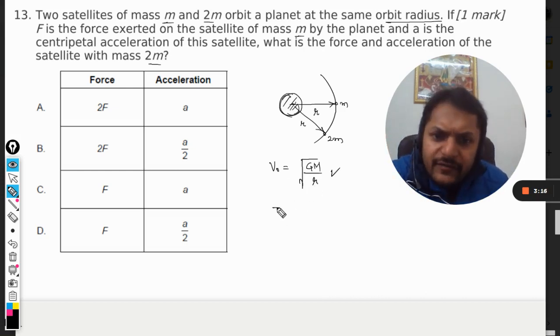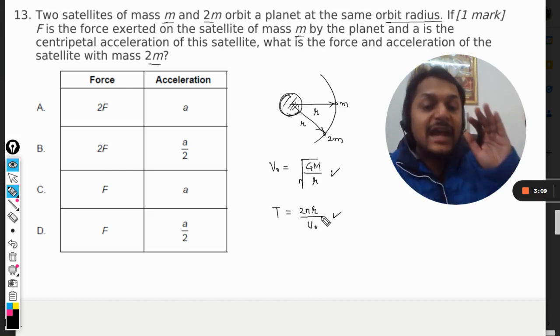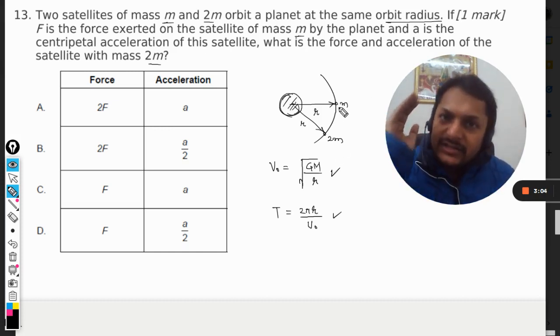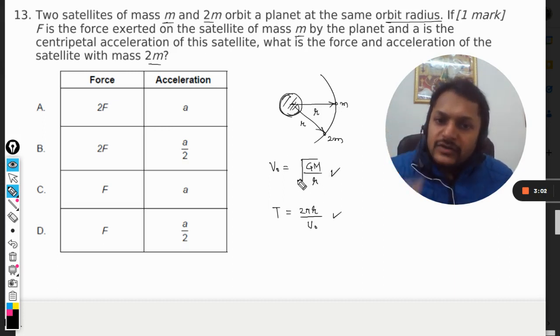Accordingly, if you find the time period for this satellite, which is T = 2πr/v₀, it comes out to be that even this time period is independent of the mass of the satellite. So when it comes to a satellite, the velocity does not depend upon the mass, the time period does not depend upon the mass.